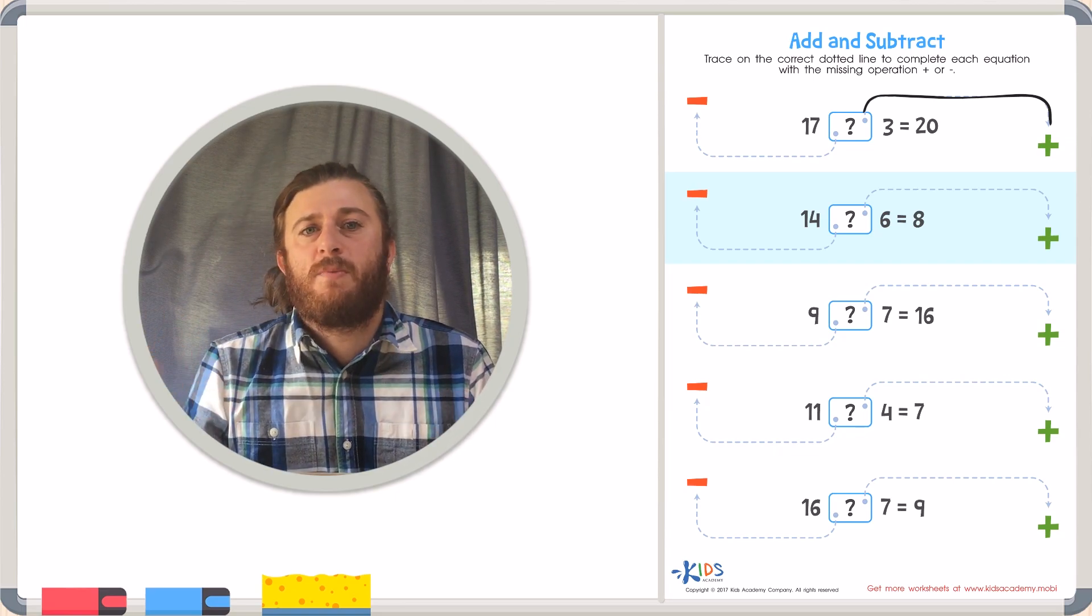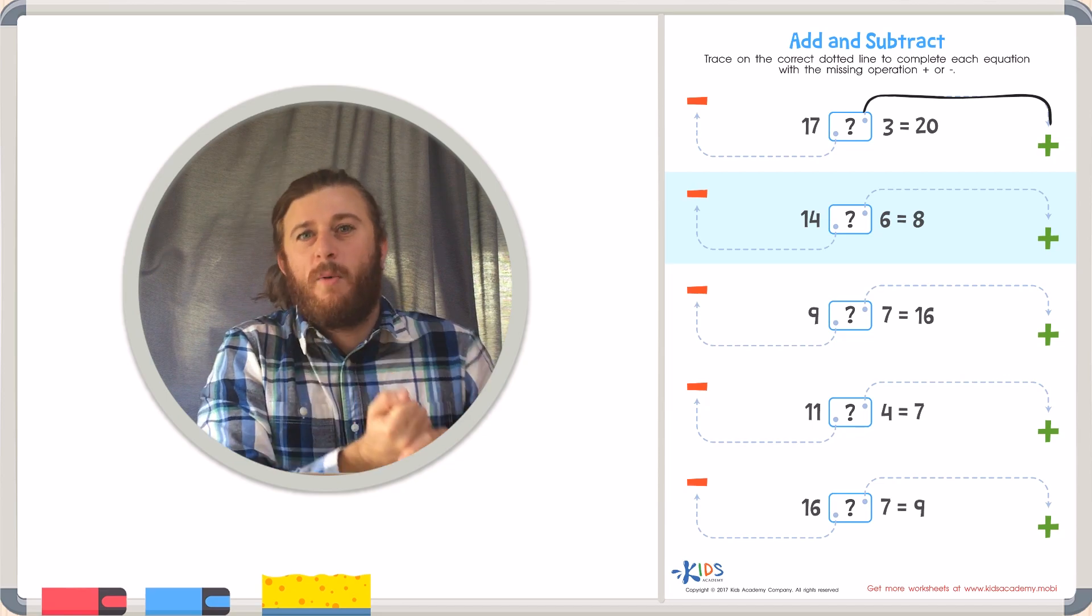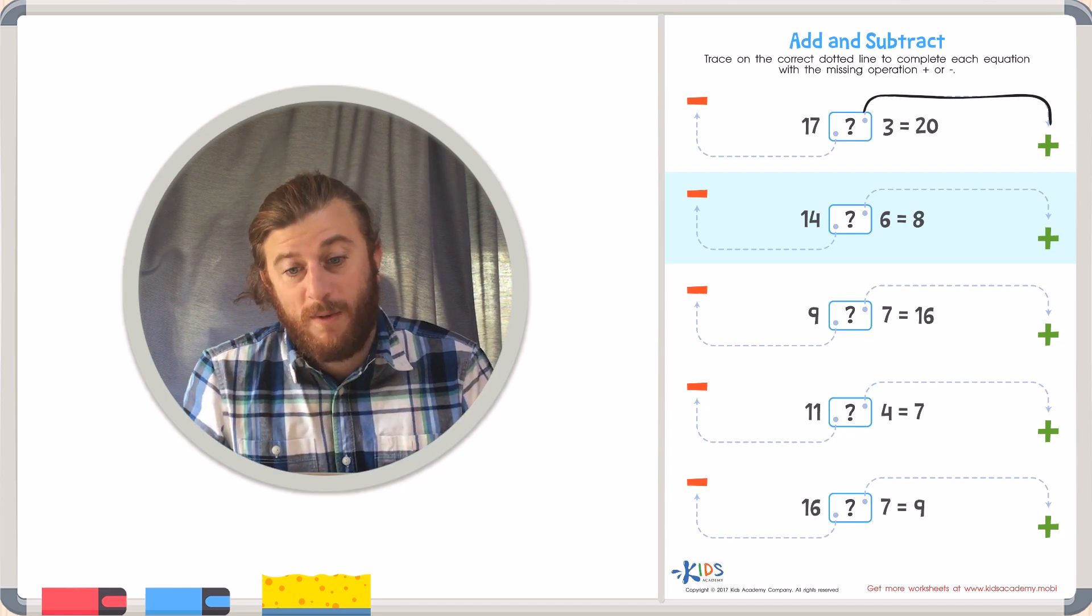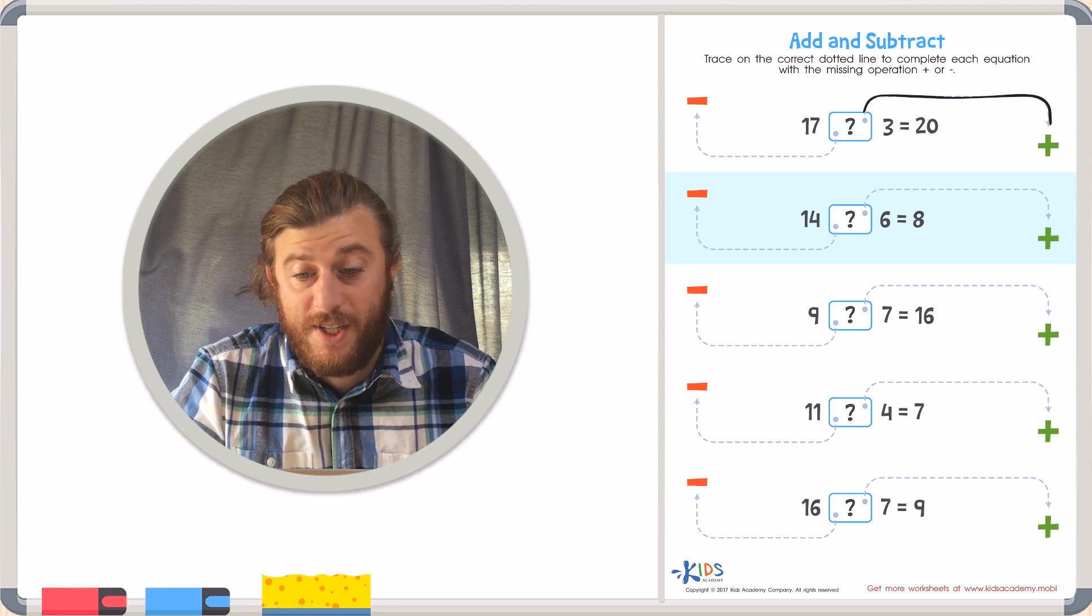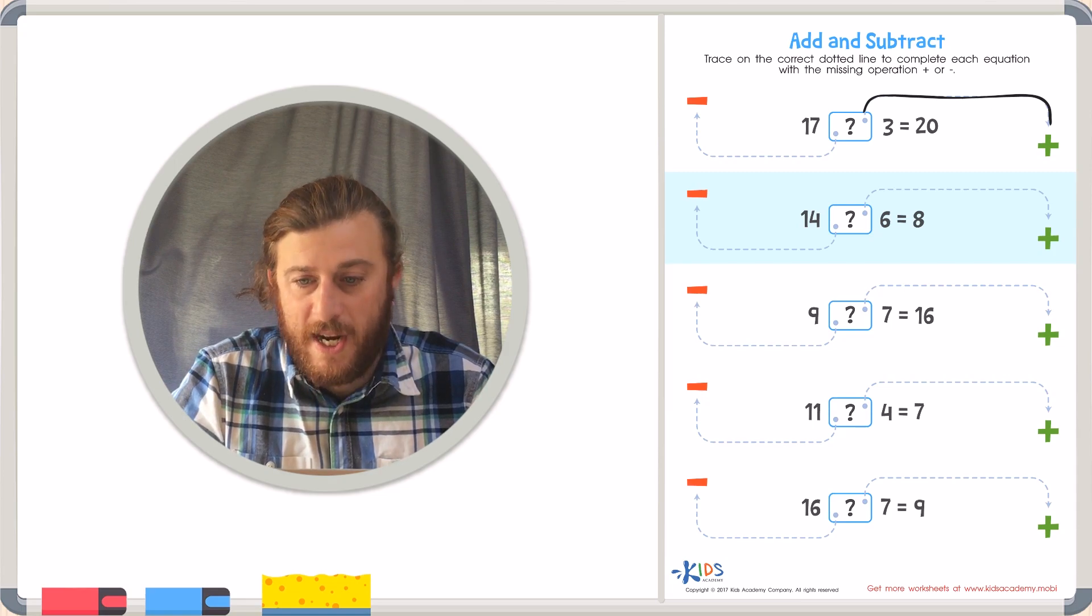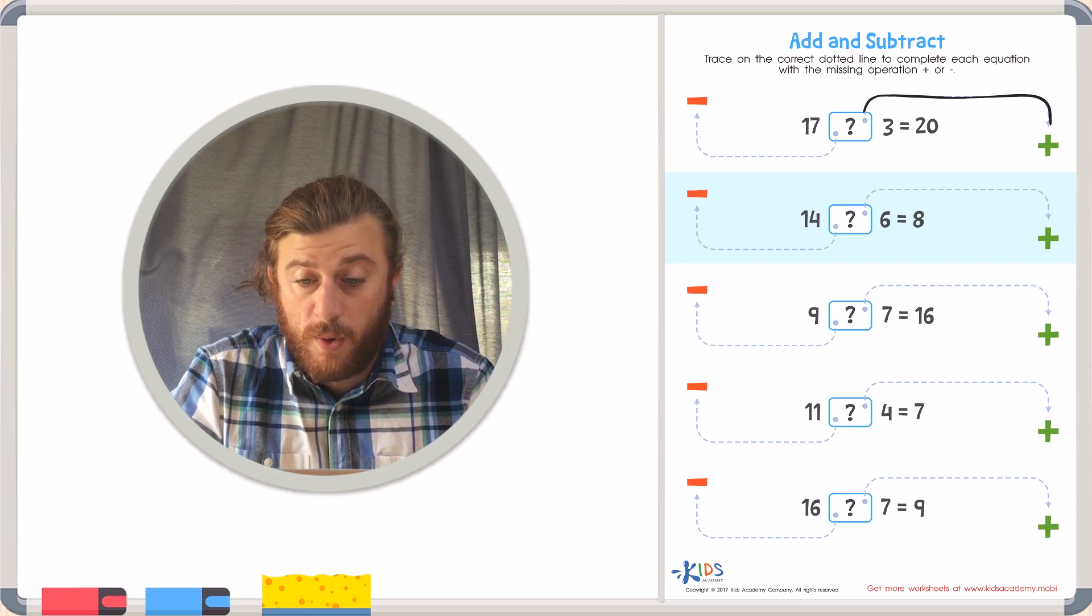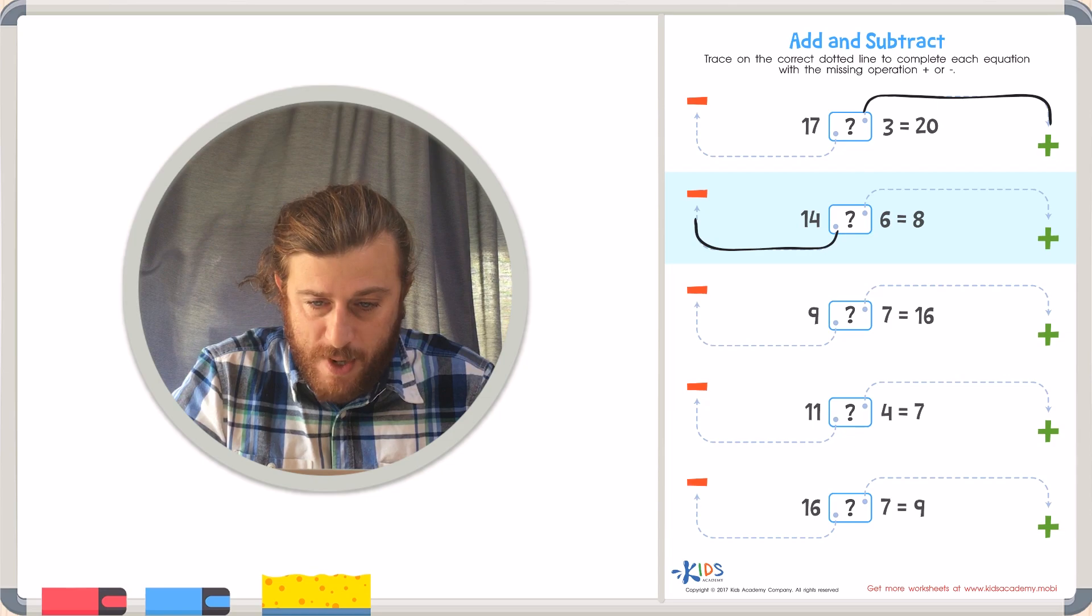So how do we make a number smaller? Do we add to it or do we take away or subtract it? Well of course we're going to have to subtract 6 from 14 in order to make it 8. So we will trace the line to subtraction.